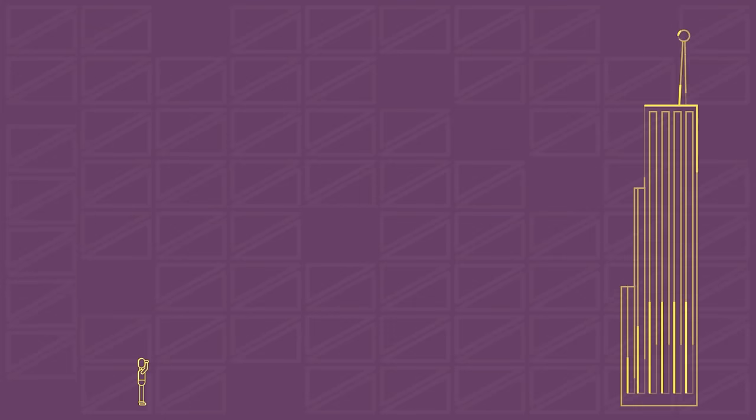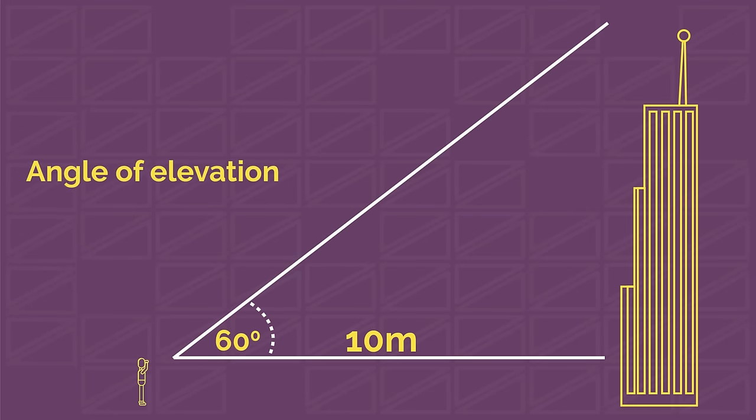We then use all of our trigonometry skills to solve problems involving angles of elevation and angles of depression. Let's look at some examples. Next time you're out and about, stand 10 metres away from a building. Estimate the angle of elevation from your sight line to the top of the building.